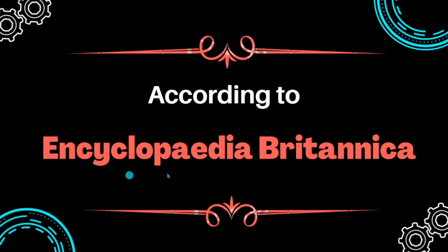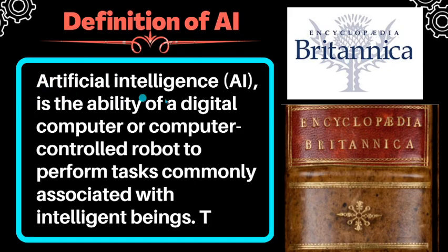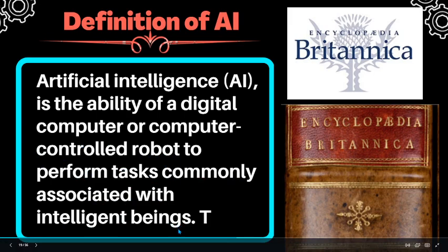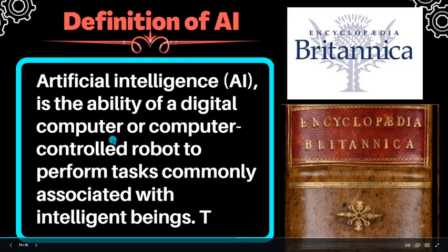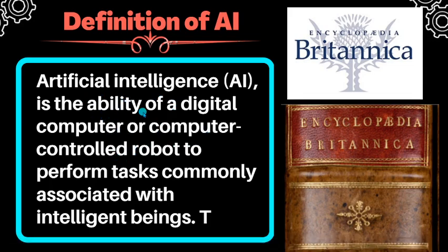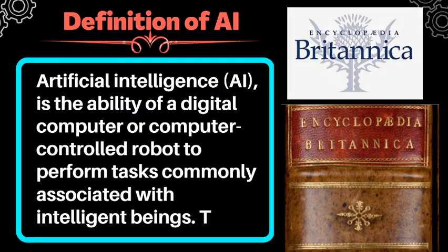According to Encyclopedia Britannica, artificial intelligence is the ability of a digital computer or computer-controlled robot to perform tasks commonly associated with intelligent beings. This is a simple and commonly understood definition. Whatever ability is associated with intelligent beings - that ability, when given to a machine, is known as AI.